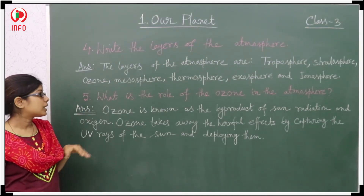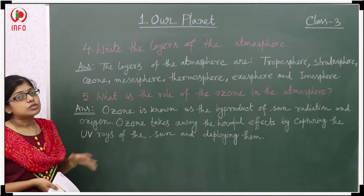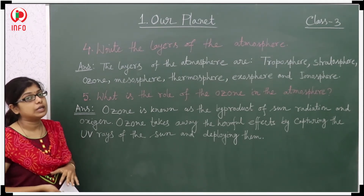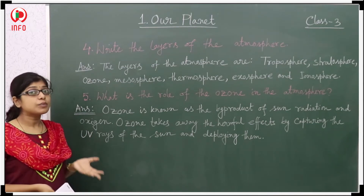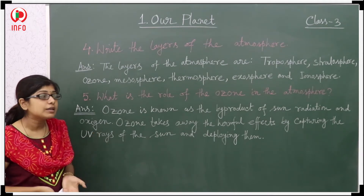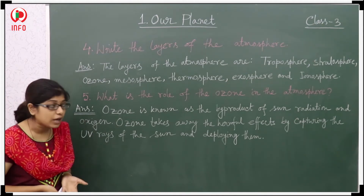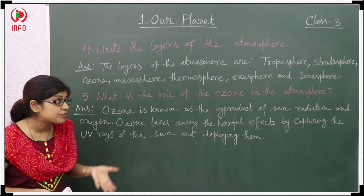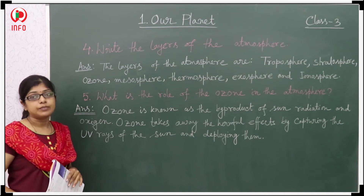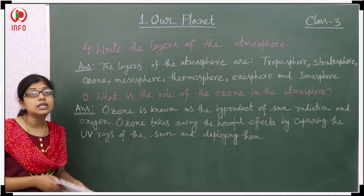Fifth question: What is the role of ozone in the atmosphere? Ozone protects us from the UV radiation of the sun. Ozone is known as a byproduct of sun radiation and oxygen. It takes away the harmful effects by capturing the UV rays of the sun and deflecting them, protecting us.